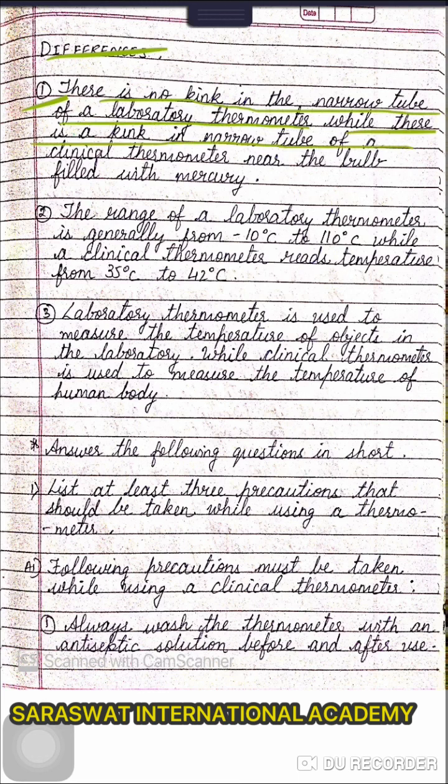Differences: first, there is no kink in the narrow tube of the laboratory thermometer, while there is a kink in the narrow tube of the clinical thermometer near the bulb filled with mercury. Second, the range of the laboratory thermometer is generally from −10°C to 110°C, while a clinical thermometer reads temperature from 35°C to 42°C. Third, a laboratory thermometer is used to measure the temperature of objects in the laboratory, while a clinical thermometer is used to measure the temperature of humans.